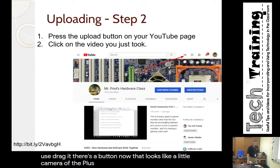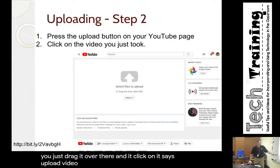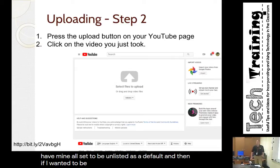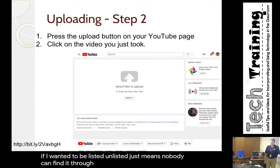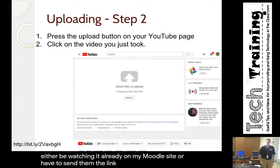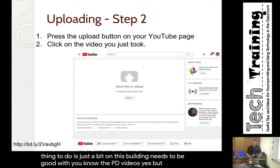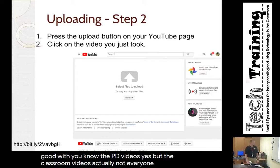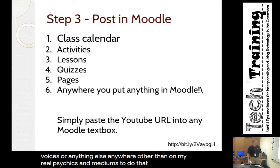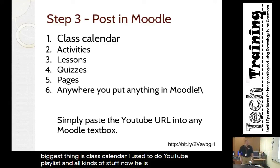To upload, there's a button that looks like a camera with a plus sign — click upload video and drag your file in. I have mine set to unlisted by default. Unlisted means nobody can find it through a Google search; they have to be on my Moodle site or have the direct link. I think that's the best approach — there's no reason for classroom videos to be publicly searchable, and students' voices should stay on my Moodle site.